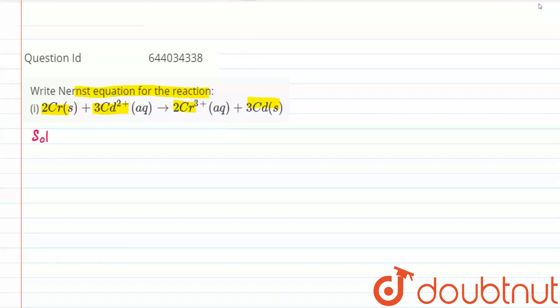So coming to the solution, let us try to write down the Nernst equation in the general form. The Nernst equation is E equals E naught minus RT by NF into log of product concentration raised to the power of the stoichiometry divided by the reactant concentration raised to the power of the stoichiometry.